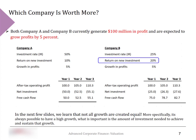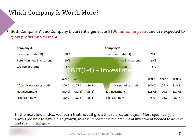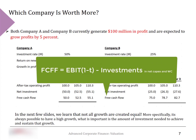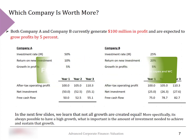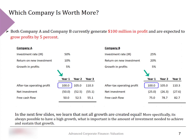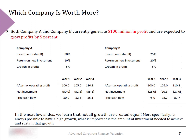Free cash flow to the firm can be written as after-tax EBIT minus required investments, including capex and working capital. In year one, after-tax EBIT for both companies is 100, but reinvestments are 50 for Company A versus 25 for Company B. You can clearly see that Company B ends up with higher free cash flows due to lower investment needs to sustain the same growth rate.